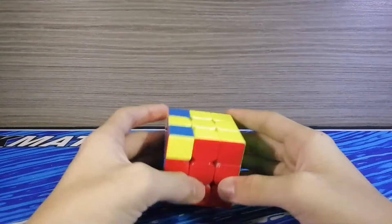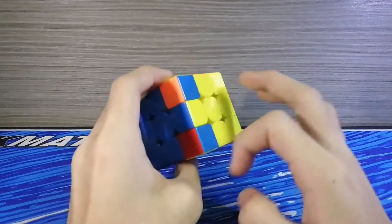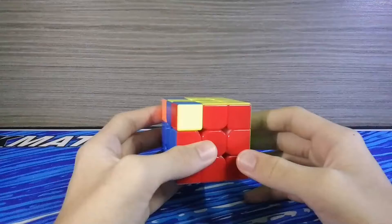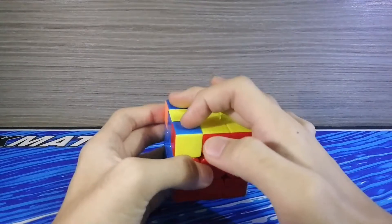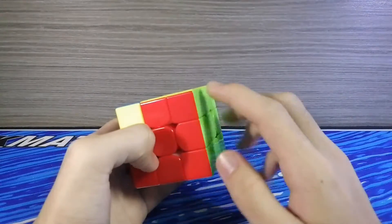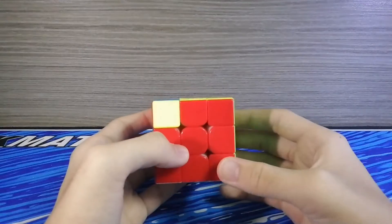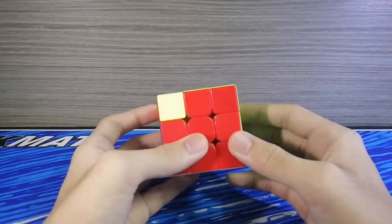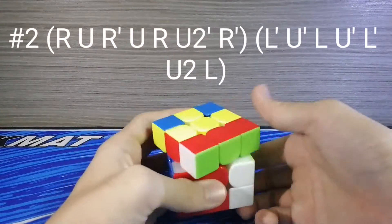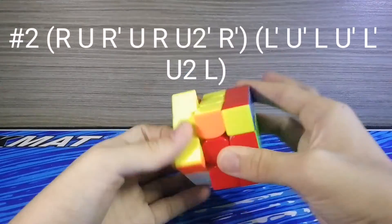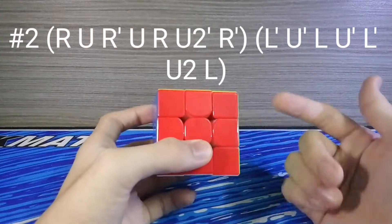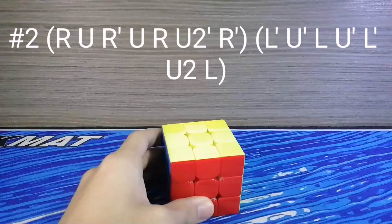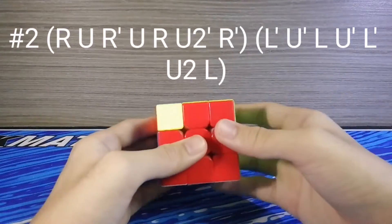Alright so here's the next case, we have a TZBL with all permuted pieces and how I memorize is these headlights are opposite of this bar here. And yeah that's how I memorize. Here's a super easy algorithm, and here's the algorithm fast.